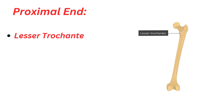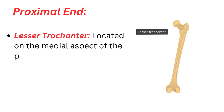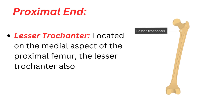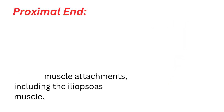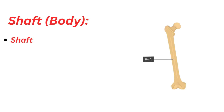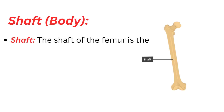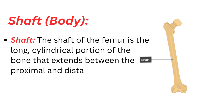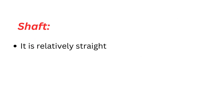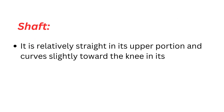Lesser trochanter: located on the medial aspect of the proximal femur. The lesser trochanter also serves as a site for muscle attachments, including the iliopsoas muscle. Shaft: the shaft of the femur is the long, cylindrical portion of the bone that extends between the proximal and distal ends. It is relatively straight in its upper portion and curves slightly toward the knee in its lower portion.